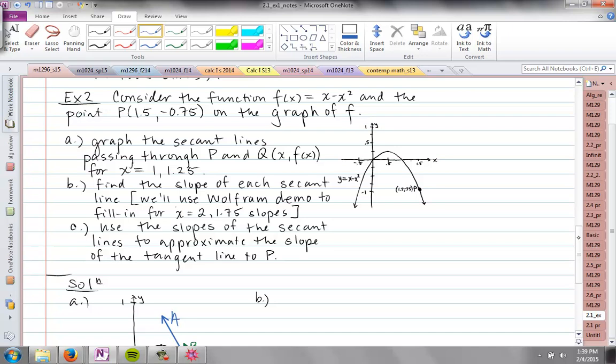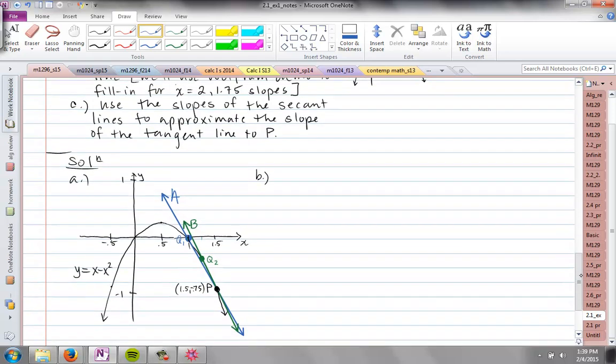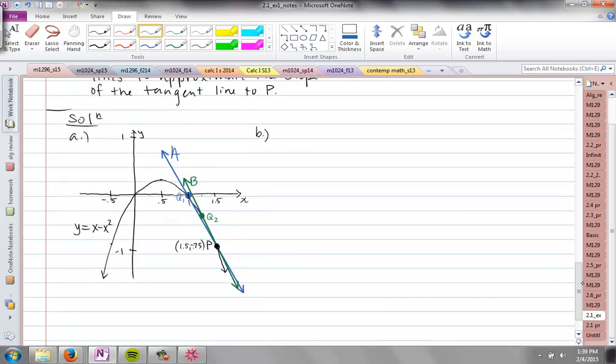Let's look at that. I worked on this ahead of time to make sure I could draw some good lines that you could see what's going on. The point P is included, and x = 1 for Q₁ is in blue. It's a blue point, and the secant line just connects Q₁ and P. That's shown in blue.